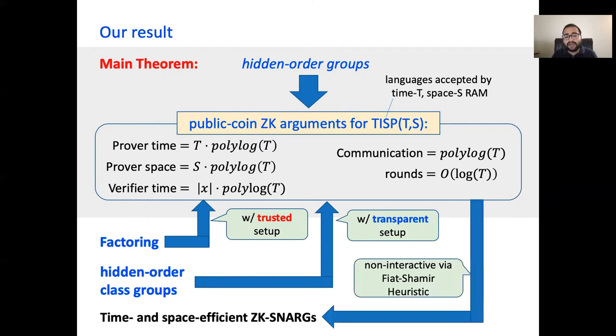Finally, we can make our public coin protocol non-interactive by applying the Fiat-Shamir heuristic, which results in time and space efficient zero-knowledge SNARGs.